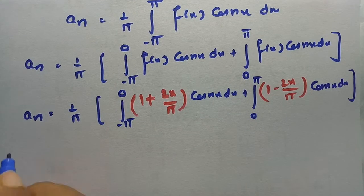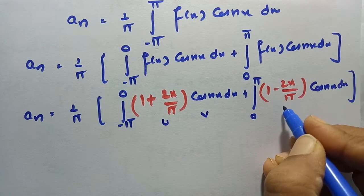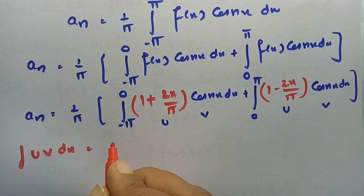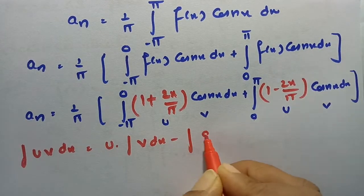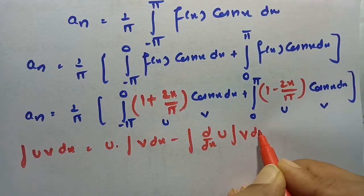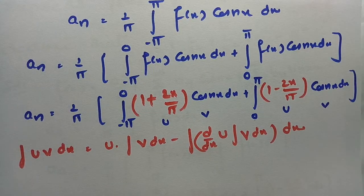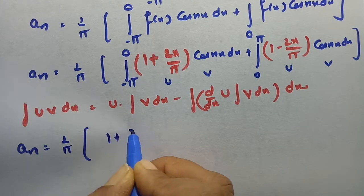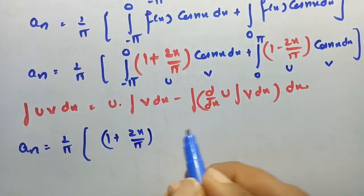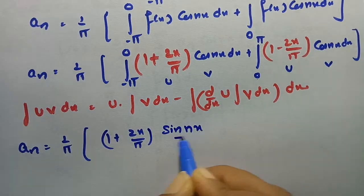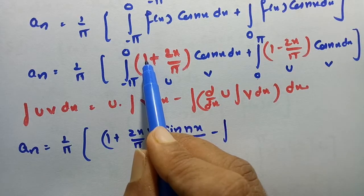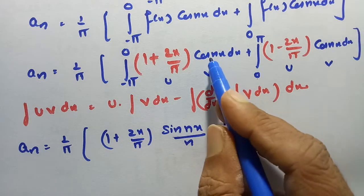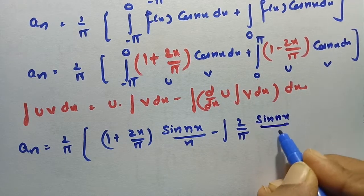We use integration by parts: u·v, where u = (1 + 2x/π) and v = cos(nx). The formula is: u·∫v dx − ∫(d/dx of u)(∫v dx) dx. So ∫cos(nx) dx = sin(nx)/n, and the derivative of (1 + 2x/π) is 2/π. Then ∫cos(nx) dx = sin(nx)/n.